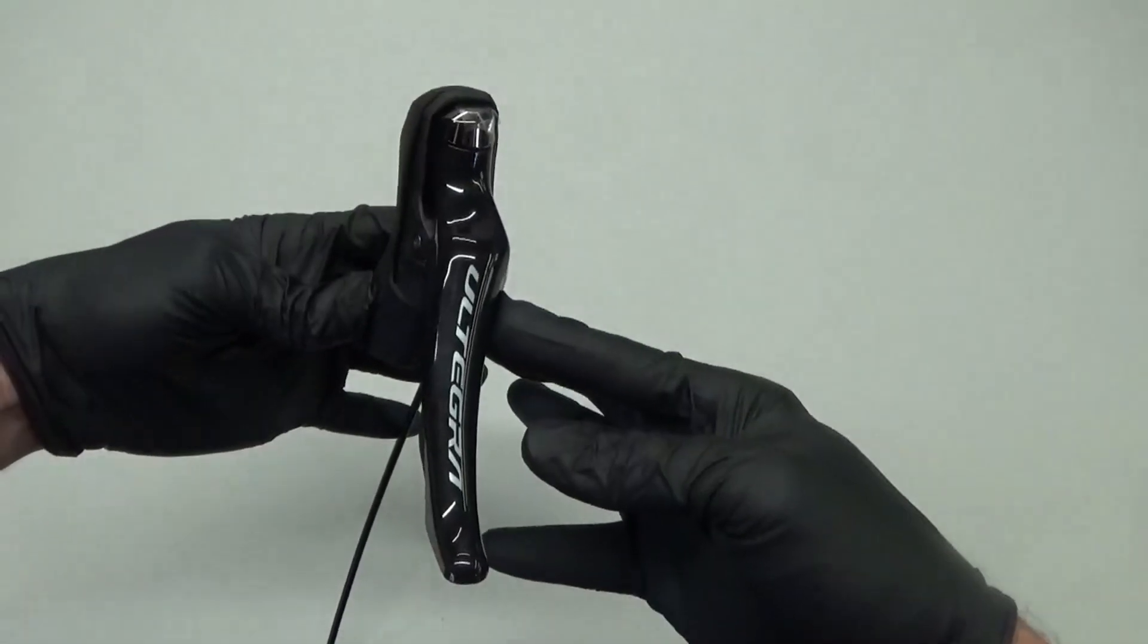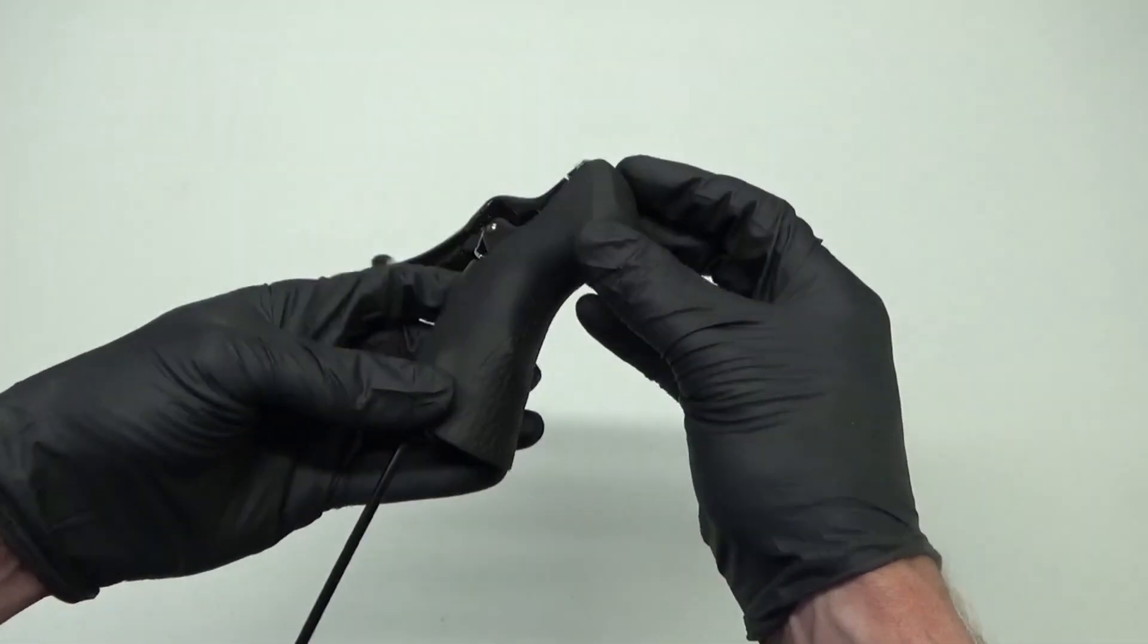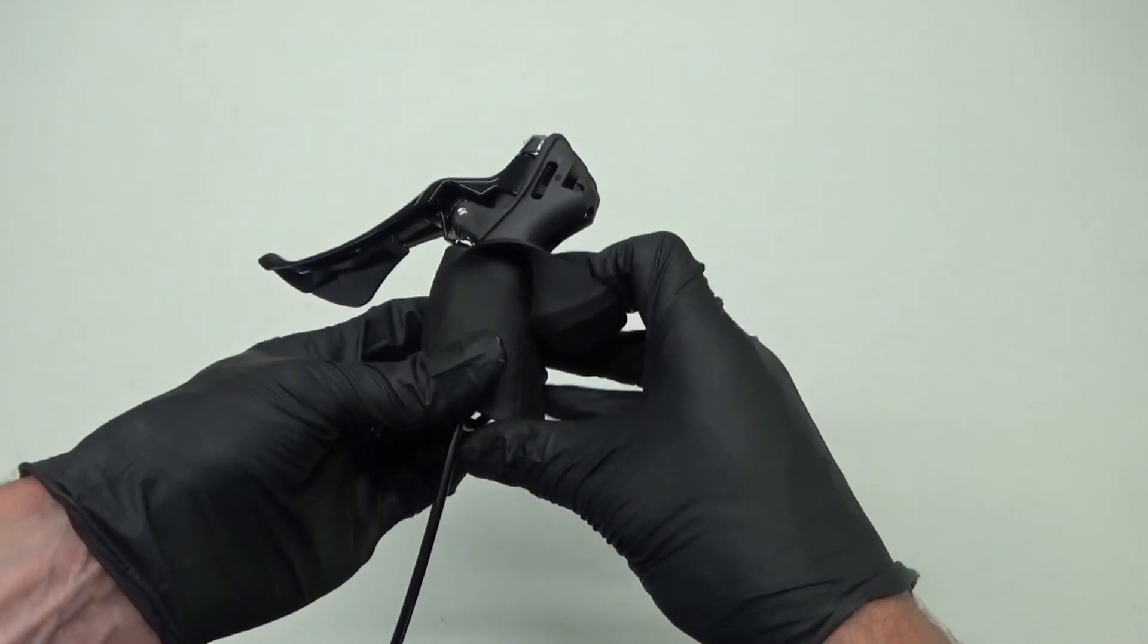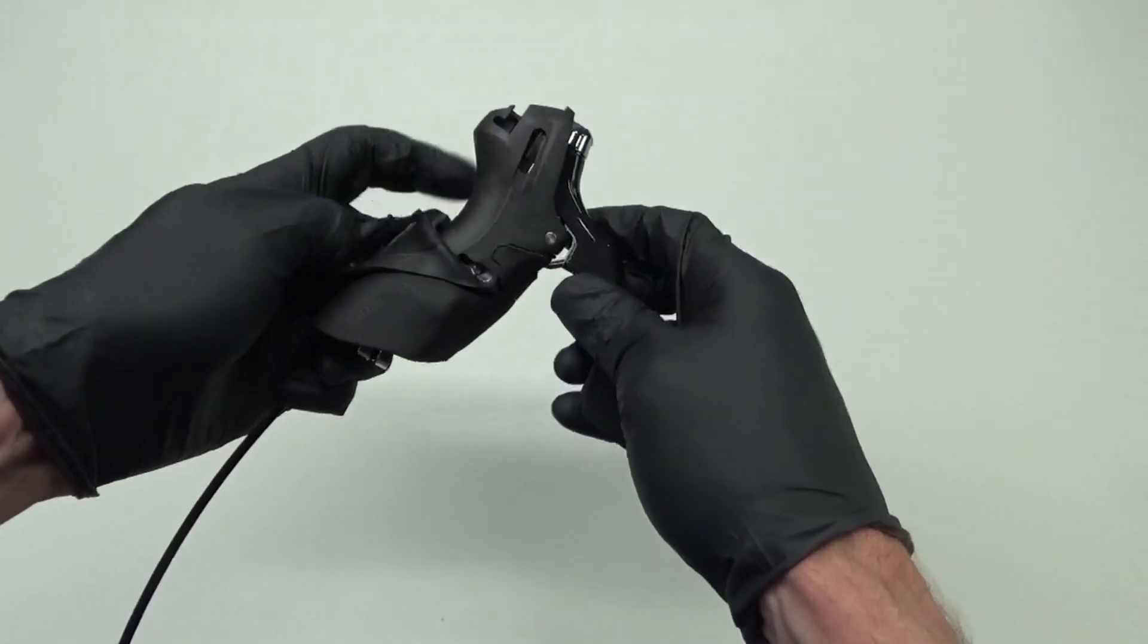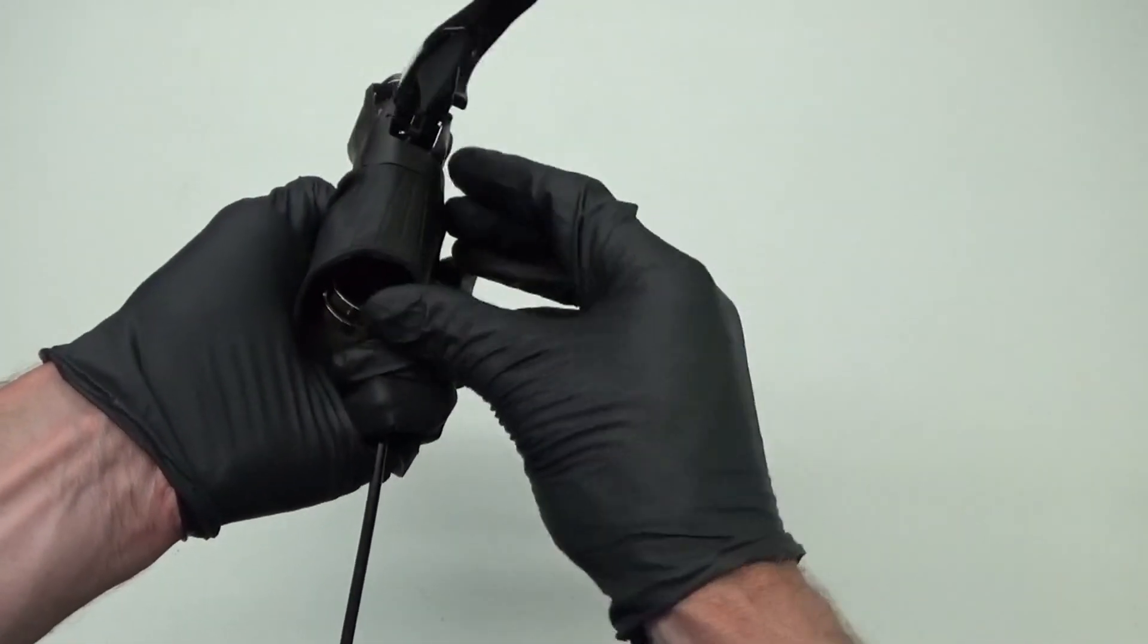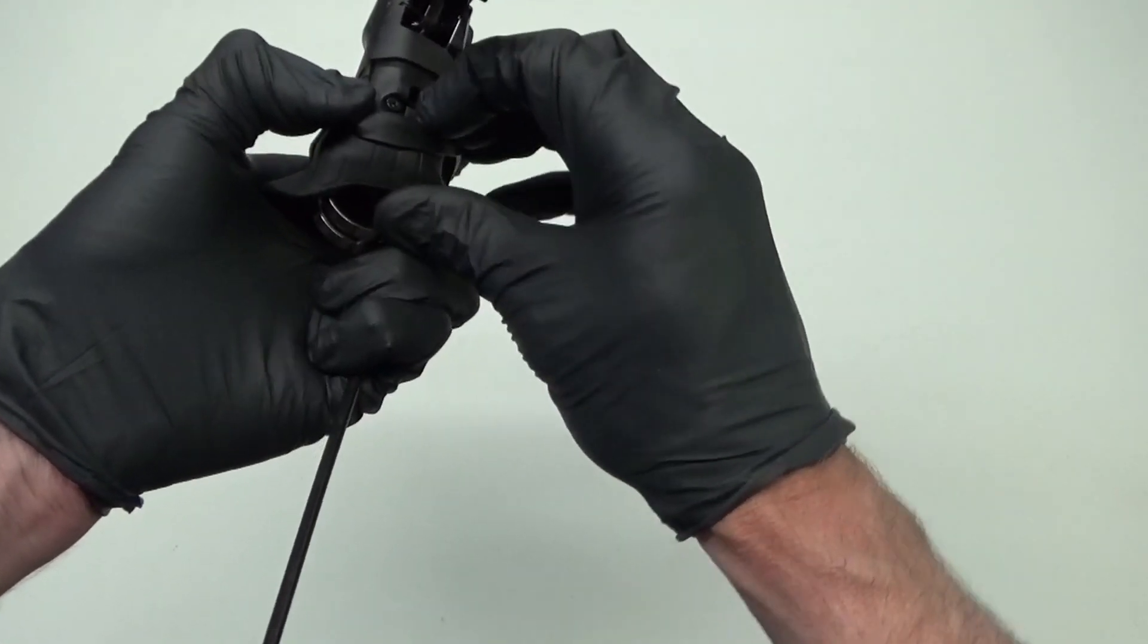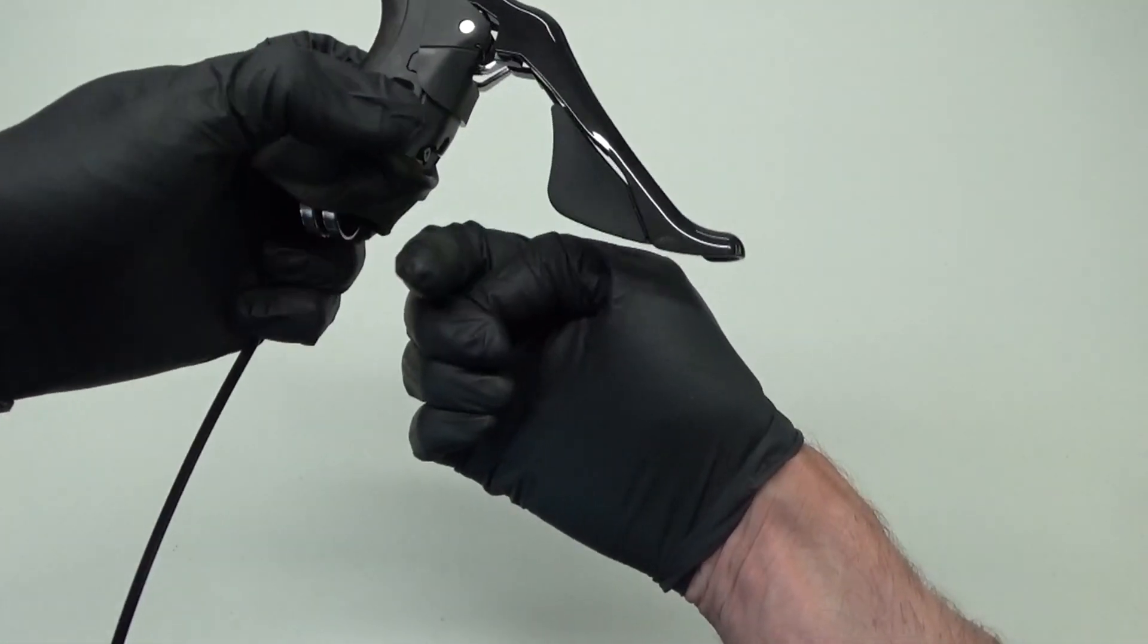So here we have the R8000 shifter. Now the first thing you want to do is pull back the top of your hood out of the way, and obviously this will be mounted on your handlebar. Then the bottom here, roll that back toward your drop. Roll that back out of the way so it's against your drop.